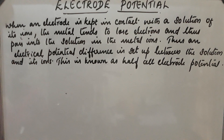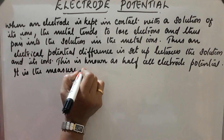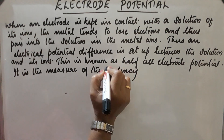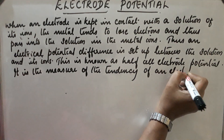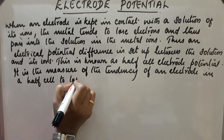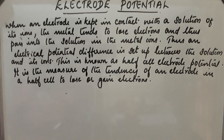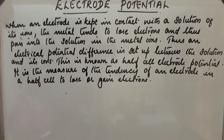Electrode potential is also the measure of the tendency of an electrode in a half cell to lose or gain electrons. If loss of electrons is taking place, such electrode potentials are called oxidation potential. And if gain of electrons is taking place, such electrode potential is called reduction potential.